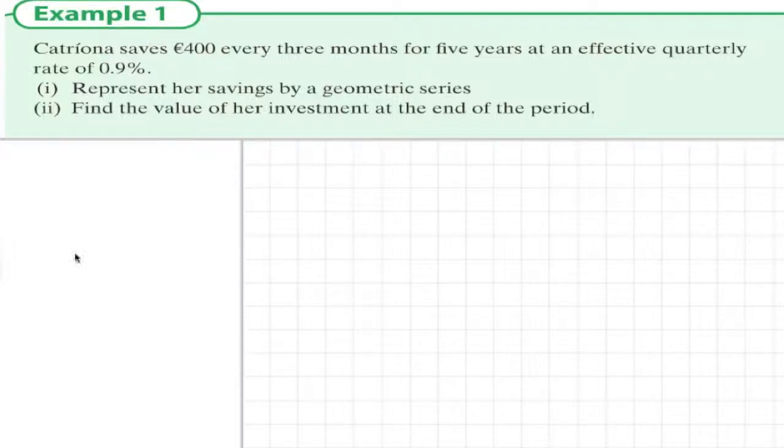Represent her savings by a geometric series. Let's write down firstly what we have. We know that it's five years, but this is broken into quarters, so that would be 20 quarters.